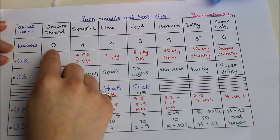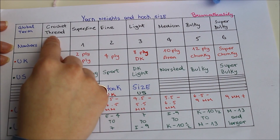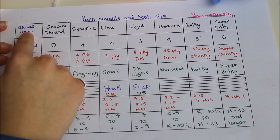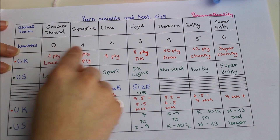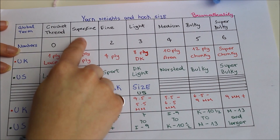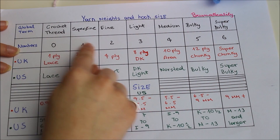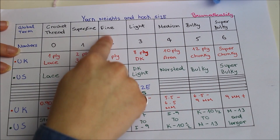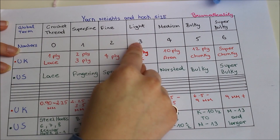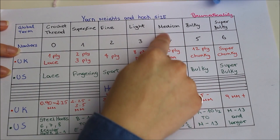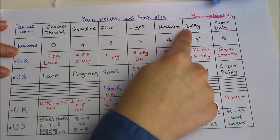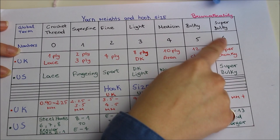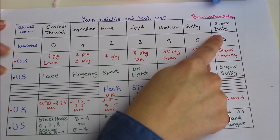For number 0 we have crochet thread as the global term. For 1 we have super fine, for 2 we have fine, for 3 we have light, for 4 we have medium, for 5 we have bulky, and for 6 we have super bulky.